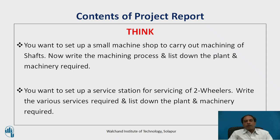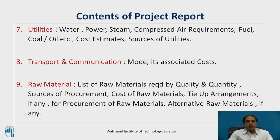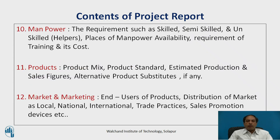For example, if you are setting up a small machine shop to carry out machining of a shaft, you have to write down the machining processes and list the plant and machinery required. Other contents include utilities — water, compressed air, road, light, power, transport and communication modes — raw material availability, cost of raw material, type of procurement, manpower required, and products, market and marketing.